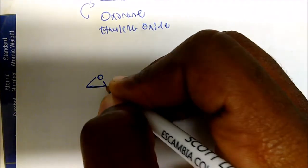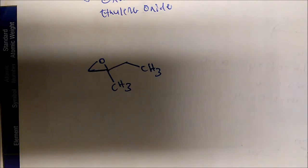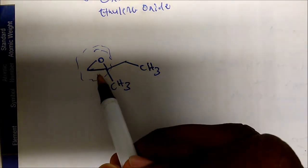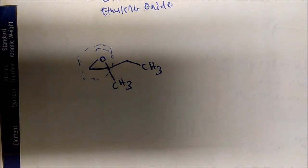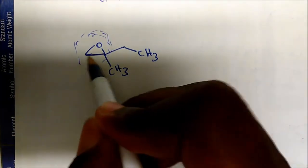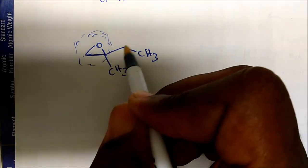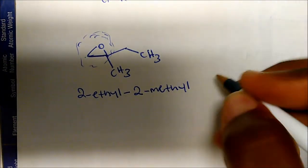Let's label a compound using the oxirane name. What if we have this epoxide here with a CH₃ group? What would be the name for this molecule using the oxirane name? Remember, this whole epoxide functional group is an oxirane, so I'm going to treat oxirane as the parent. The longest continuous carbon chain within the oxirane is just one, two. On carbon two we have an ethyl group and a methyl group, so this is 2-ethyl-2-methyloxirane.